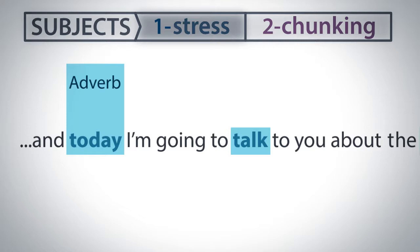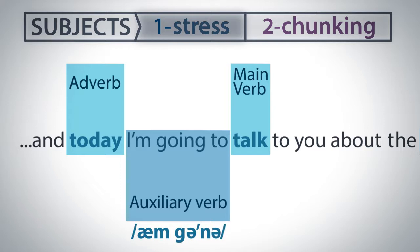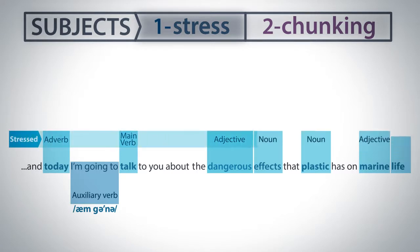Also, verbs are usually stressed. In this case, the main action verb in the clause is talk. You'll see that the auxiliary verb 'be' and 'going to' are not stressed. This means our pronunciation of them is much more relaxed and much quicker. It sounds like this: 'I'm gonna.' Finally, you'll notice that adjectives and nouns are also often stressed. In this case, dangerous effects and marine life.